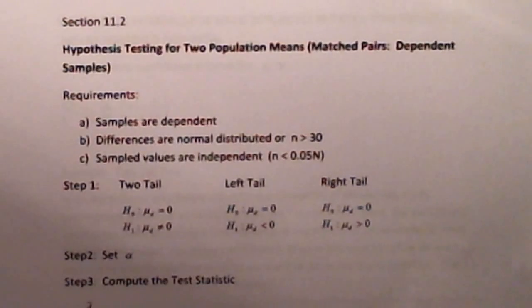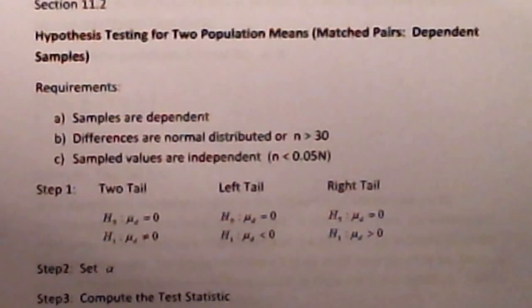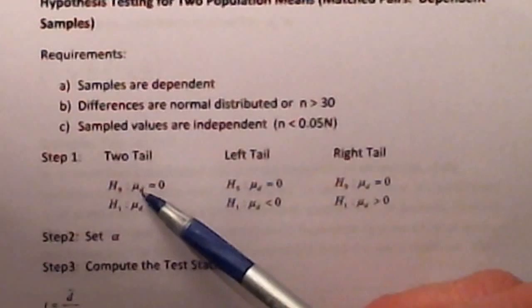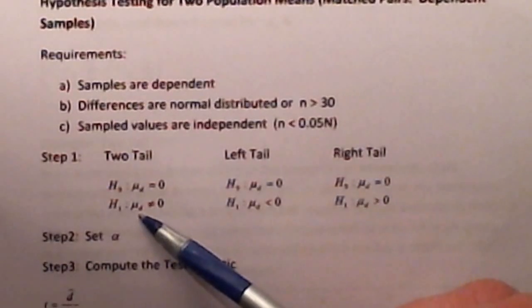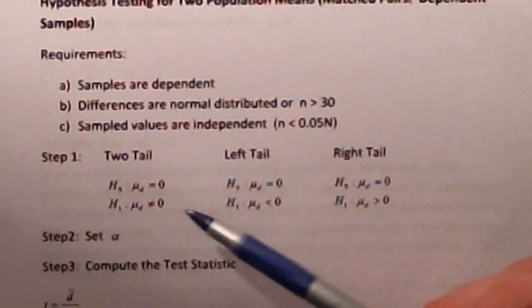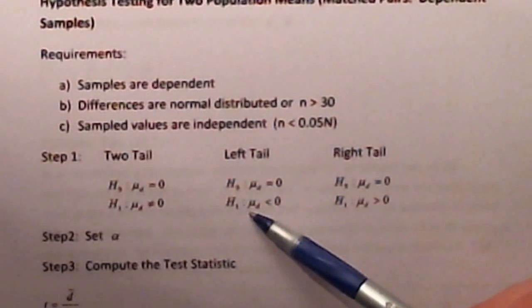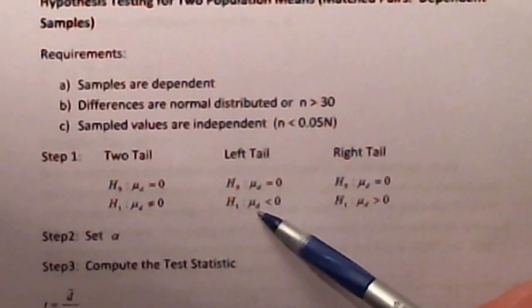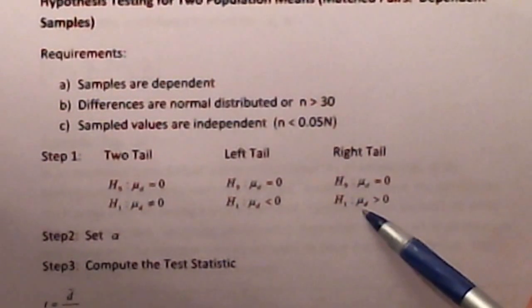There are three different types of hypothesis tests you can conduct. A two-tailed test where the null hypothesis says that the mean difference of the two populations is equal to zero versus the alternative hypothesis that says the mean difference between the two unknown populations is not equal to zero. You could have a one-tailed test — a left-tailed test would say the mean difference is less than zero, and a right-tailed test would say the mean difference is greater than zero.